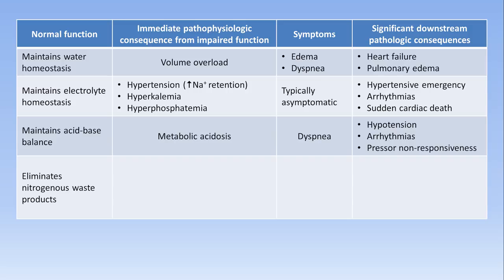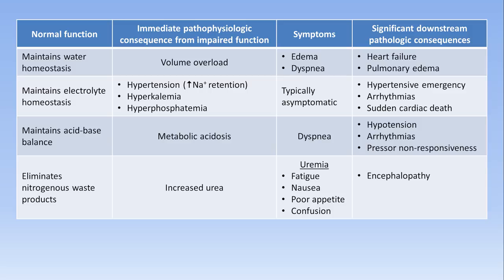Nitrogen-containing waste products from normal metabolism are eliminated by the kidneys as urea. When urea levels rise, patients develop the syndrome of uremia, which consists of fatigue, nausea, poor appetite, and confusion. Two specific clinical entities are seen in uremia: uremic encephalopathy, manifested by confusion, drowsiness, disorientation, slurred speech, and impaired memory; and uremic pericarditis, which manifests as positional chest pain, ECG changes, and in some patients development of a pericardial effusion.